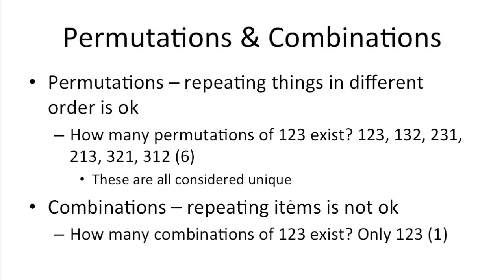With combinations, order doesn't matter. So if I were to ask how many combinations of 1, 2, 3 exist, there's only 1, 1, 2, and 3. 1, 2, and 3 would be the same as saying 1, 3, 2, 2, 3, 1, and so on and so forth.